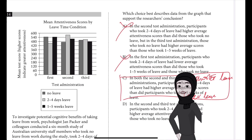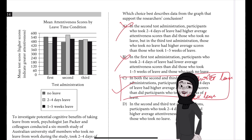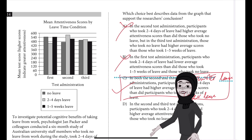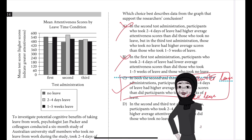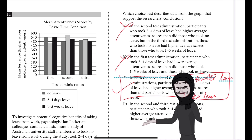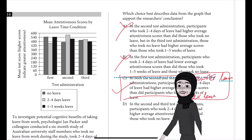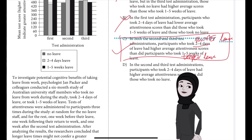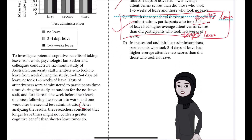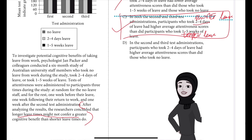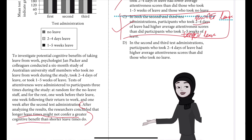Choice C is the best answer. This is the best answer because it describes data from the graph that support Jan Packer and colleagues' conclusion about the effect of leave time on attentiveness of university employees. Two to four days is the shorter leave and one to five weeks is the longer leave, and their conclusion is that longer leave times might not confer a greater cognitive benefit than shorter leave times.